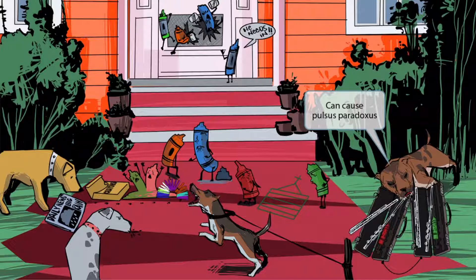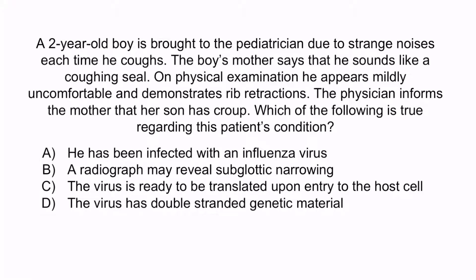Now that we've covered the image, let's do a question to apply this. A two-year-old boy is brought to the pediatrician due to strange noises each time he coughs. The boy's mother says that he sounds like a coughing seal. On physical examination, he appears mildly uncomfortable and demonstrates rib retractions. The physician informs the mother that her son has croup. Which of the following is true regarding this patient's condition? A: he has been infected with an influenza virus. B: a radiograph may reveal subglottic narrowing. C: the virus is ready to be translated upon entry to the host cell. Or D: the virus has double-stranded genetic material.